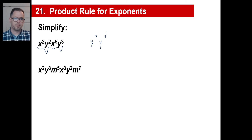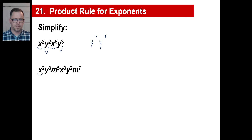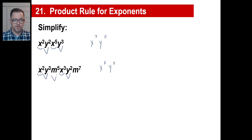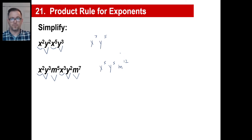Pause and copy. Okay, let's go left to right. We've got x squared here and x to the 3rd there, so that's x to the 5th. We've got y to the 3rd and y to the 2nd — that's y to the 5th. And m to the 5th times m to the 7th is m to the 12th.